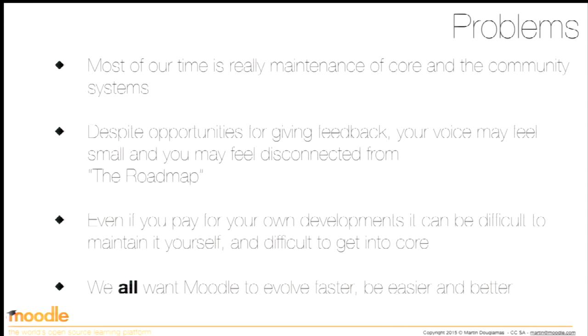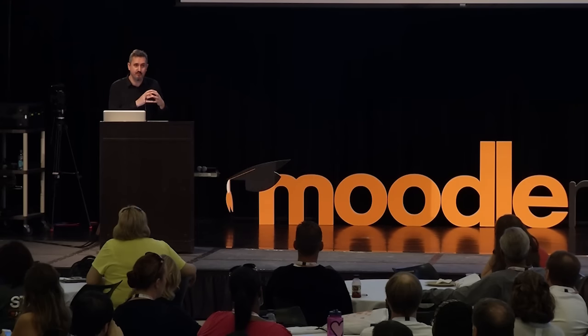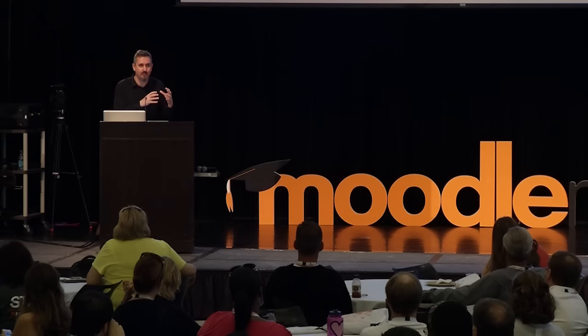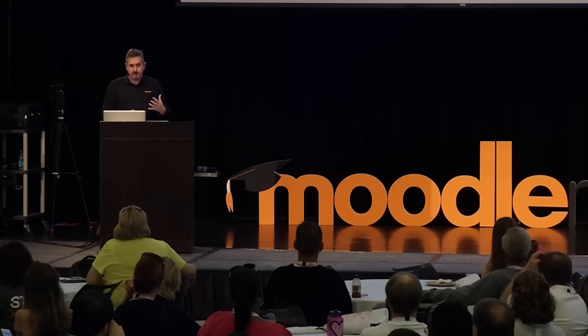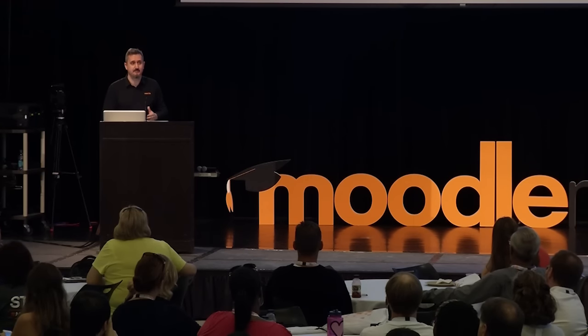But the problem is that most of our time is spent maintaining core and the community systems. Despite your opportunities for feedback through these systems, you probably feel pretty small — your voice is not really being heard. People say they're disconnected from the roadmap. Even if you pay for your own developments, it can be difficult to maintain them yourself. There can be quite a lot of work in maintaining plug-ins. It's much better if those features get into core and are supported by the whole community, but it's difficult to do that. Every time we integrate things into core, it goes through a lot of reviewing and work to make it happen.